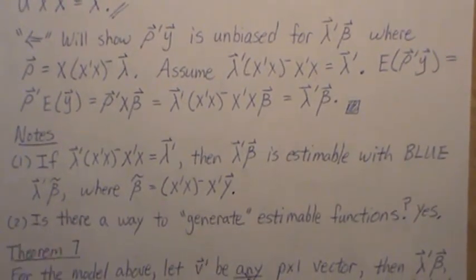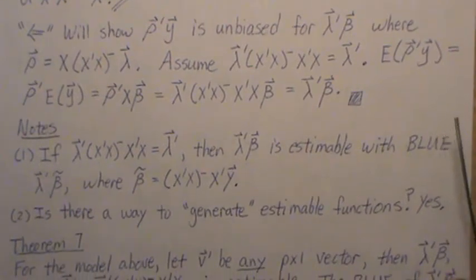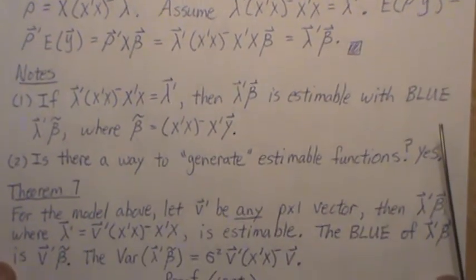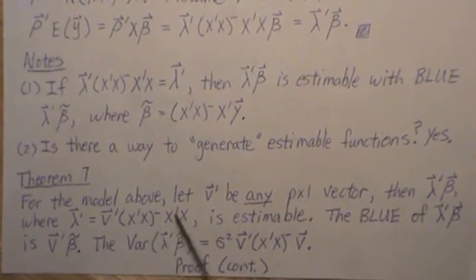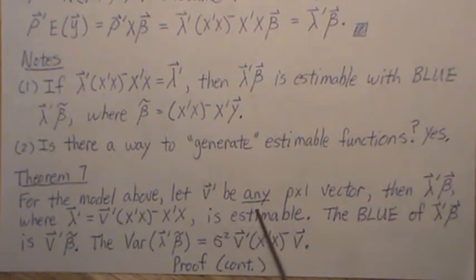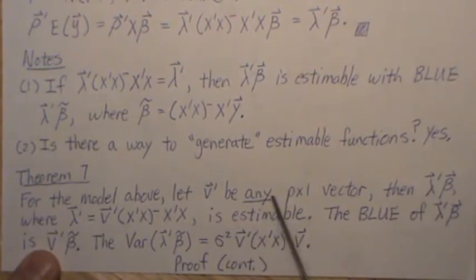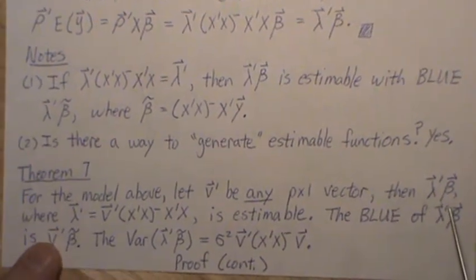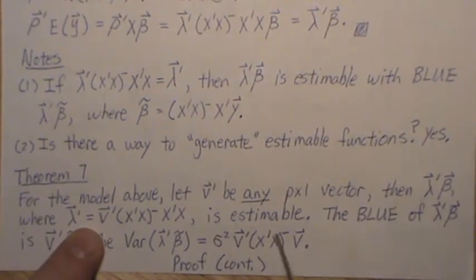Now, is there a way to just generate estimable functions? And the answer is yes. And I say that because theorem seven, that's the last theorem we'll do in this little miniseries, it is so intriguing to me how this works. So intriguing. I find it pretty fascinating, actually. So for the model above, let V be any P by one vector. Any. Then lambda prime beta, where lambda is this, is estimable.